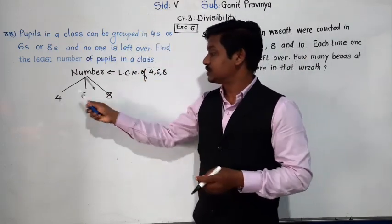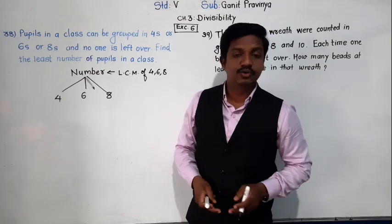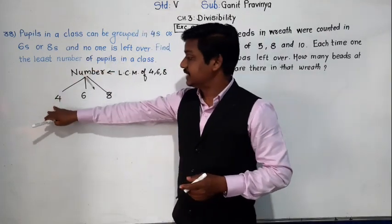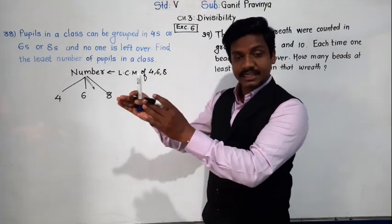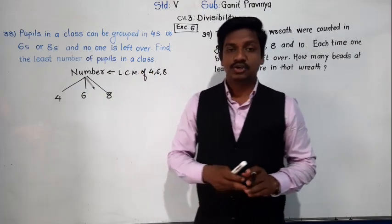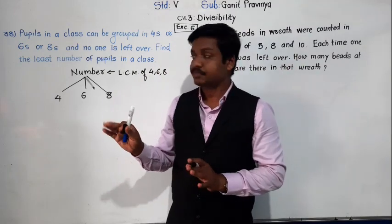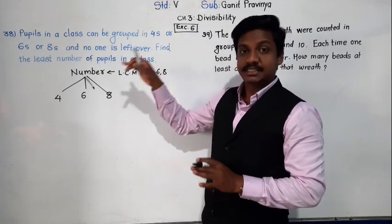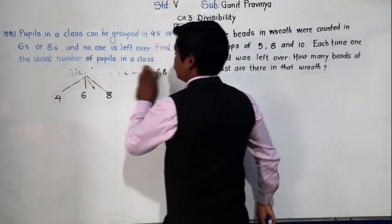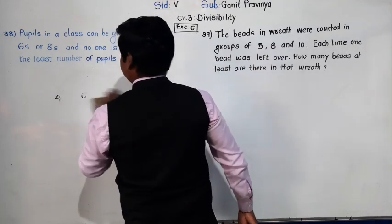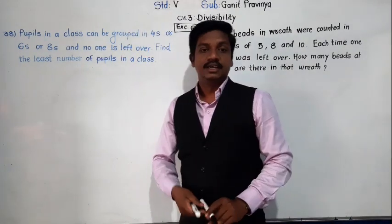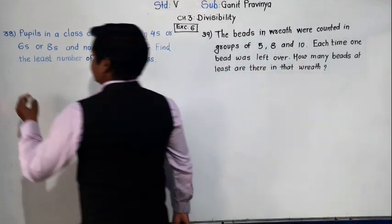The least number which is divisible by 4, 6 and 8 is nothing but the LCM of 4, 6 and 8. Whichever is the LCM of 4, 6 and 8, that number we can divide into groups of 4 and also into groups of 6 as well as into groups of 8. So to find the least number of pupils in a class, we have to find LCM of 4, 6 and 8.